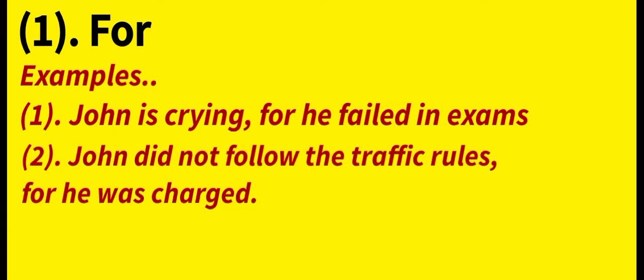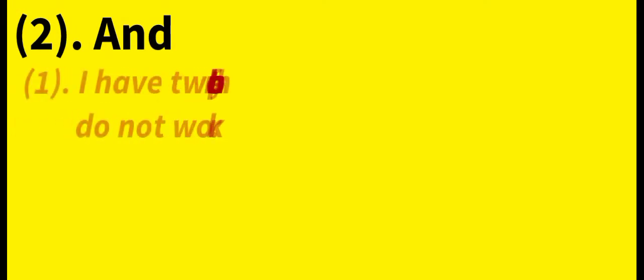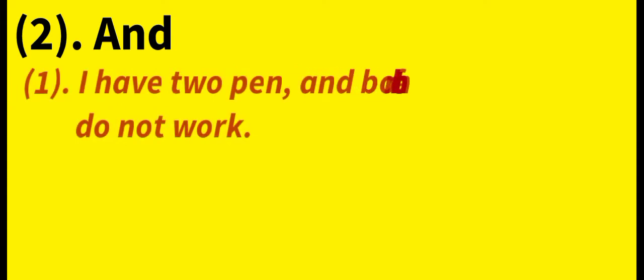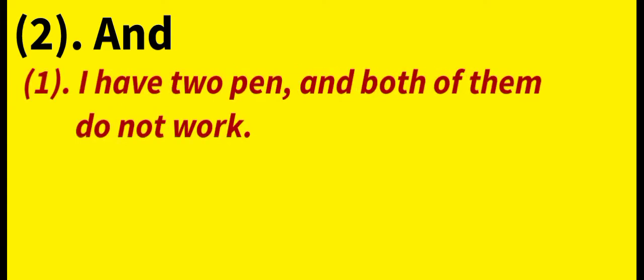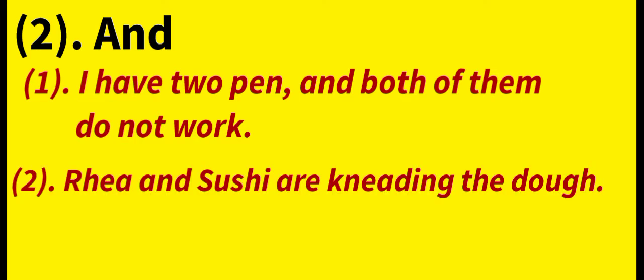The next coordinating conjunction is 'And.' Example: 'I have two pens and both of them do not work.' Next example: 'Ria and Sushi are needing the dough.' Here, 'needing the dough' means kneading the dough — that is, kneading flour — so Ria and Sushi are kneading the dough.